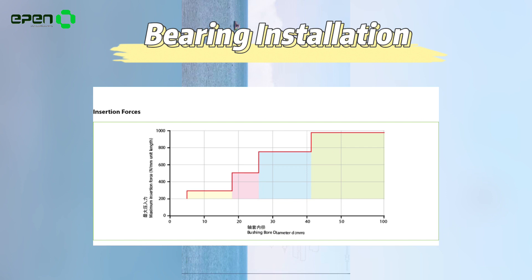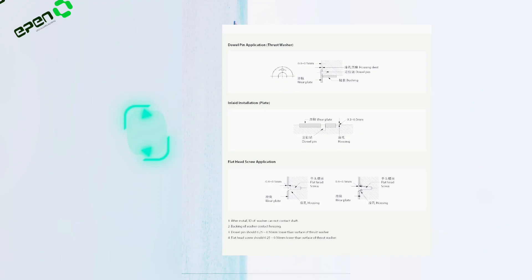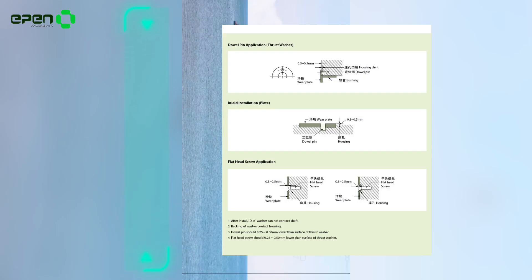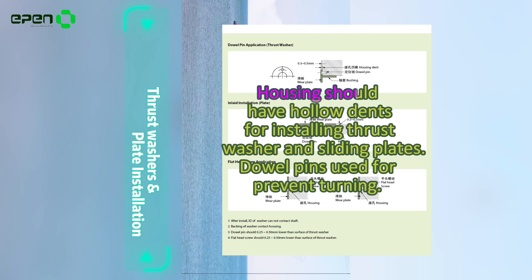The housing should have hollow dents for installing thrust washers and sliding plates. Dowel pins are used to prevent turning. In their free state, wrapped bushings will not be fully closed.